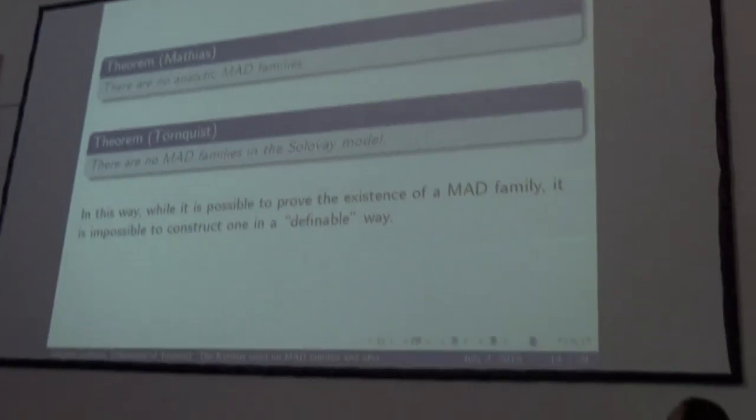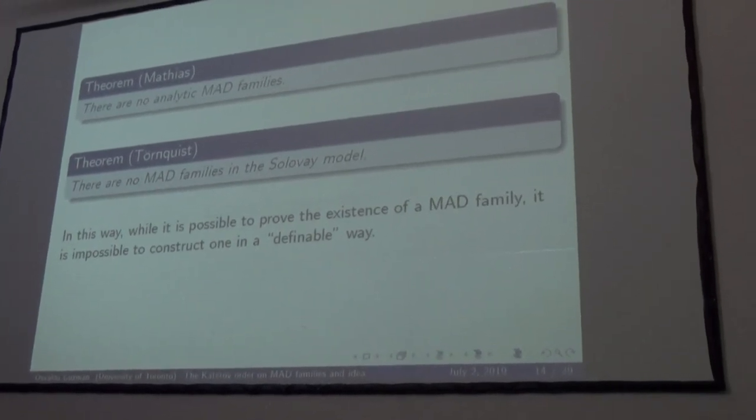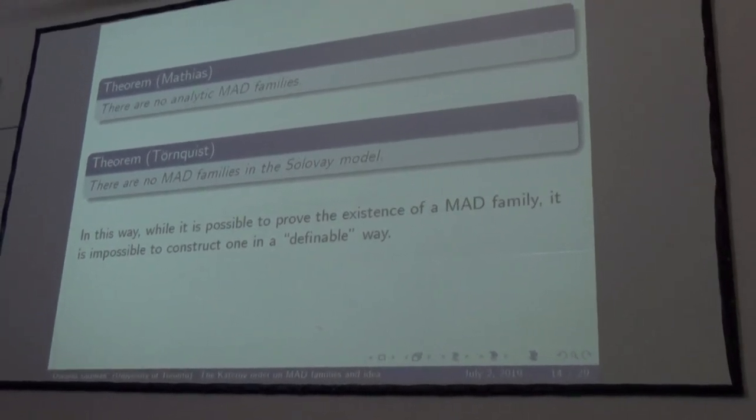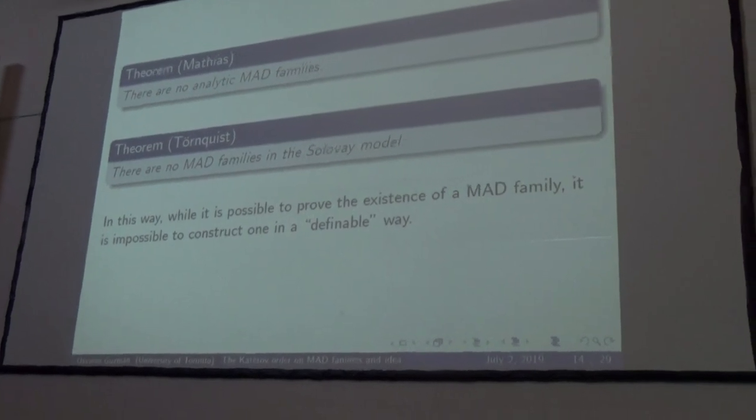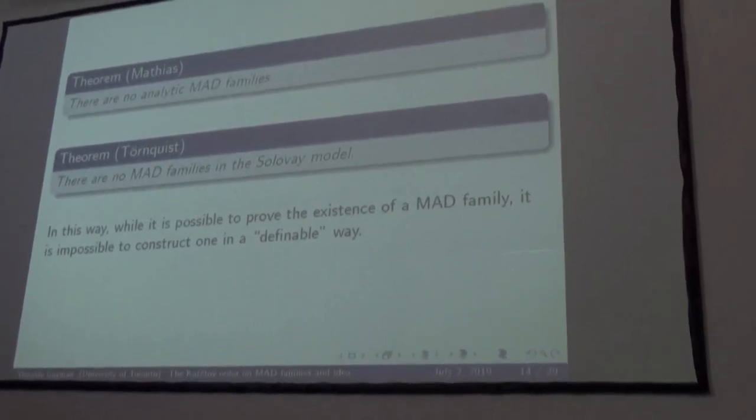A classical result of Mathias is that there are no analytic MAD families. Not long ago, Törnquist showed that there are no MAD families in the classical Solovay model. In fact, many results regarding the definability of MAD families have appeared recently — it has been very actively studied.